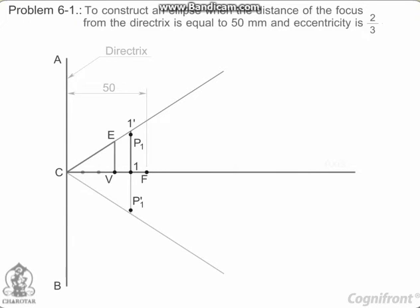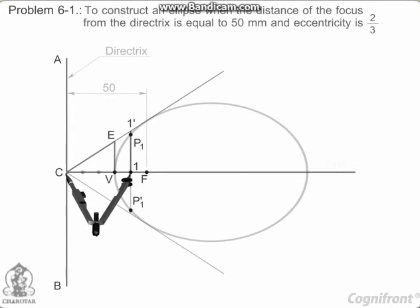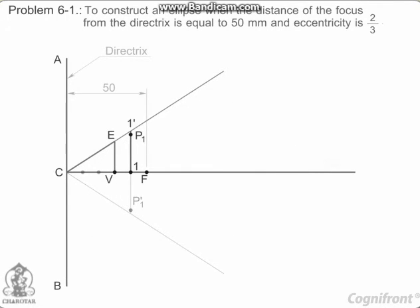These are the points on the ellipse because the distance of P1 from AB is equal to C1. P1F equals 1-1 dash and 1-1 dash upon C1 equals VF upon VC equals 2 by 3.